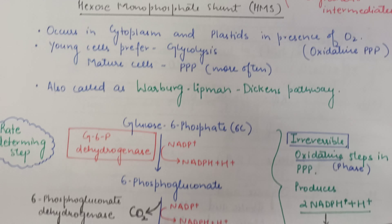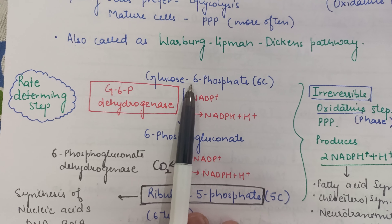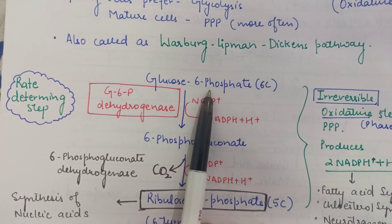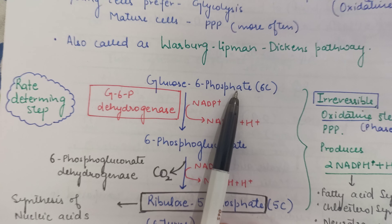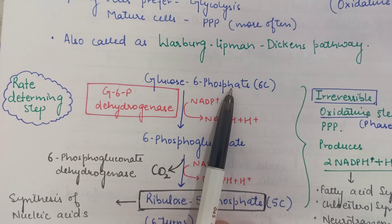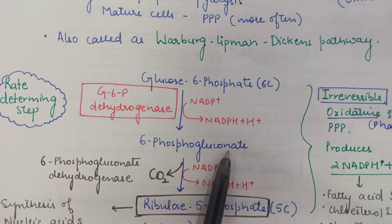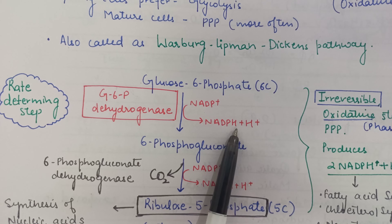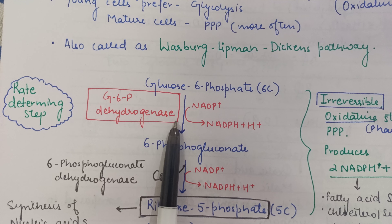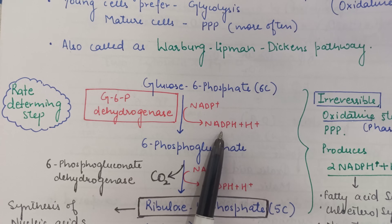In the pentose phosphate pathway, glucose is first phosphorylated by hexokinase to form glucose-6-phosphate, which acts as a locking device since it cannot exit the cell. Glucose-6-phosphate, instead of undergoing glycolysis, enters the PPP by being converted to 6-phosphogluconate, producing NADPH in the presence of the enzyme glucose-6-phosphate dehydrogenase. NADPH is a reducing potential.